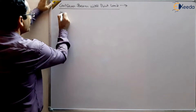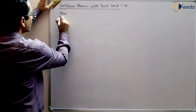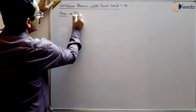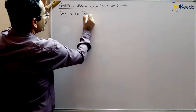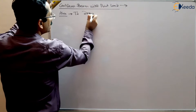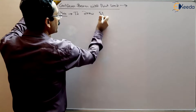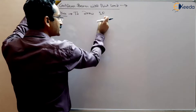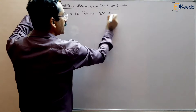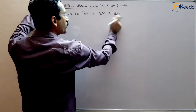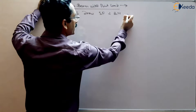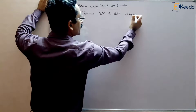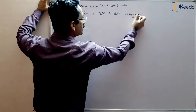The aim is to draw the shear force — we will write SF for shear force — and bending moment, BM for bending moment diagram for this cantilever beam with point load.